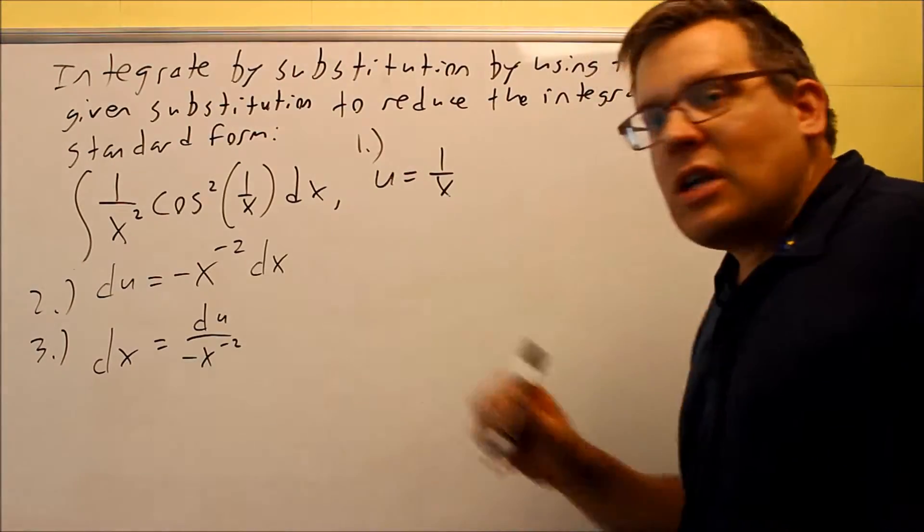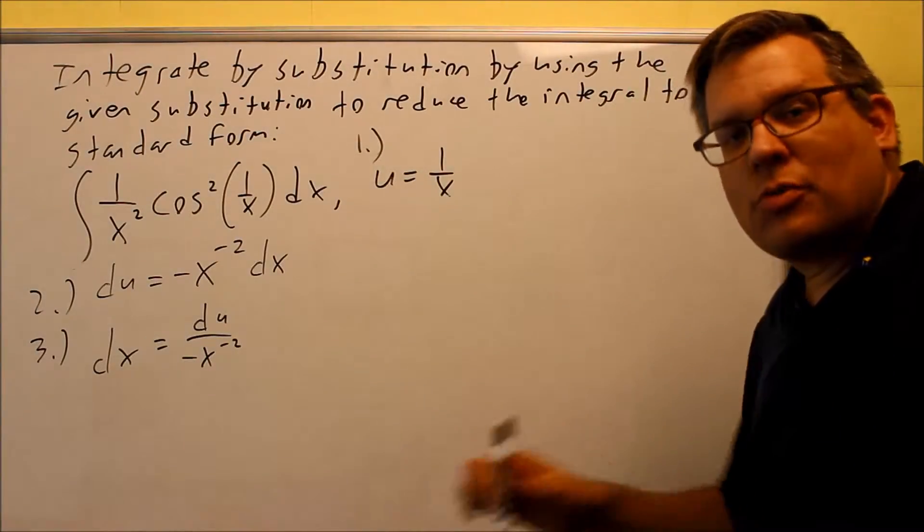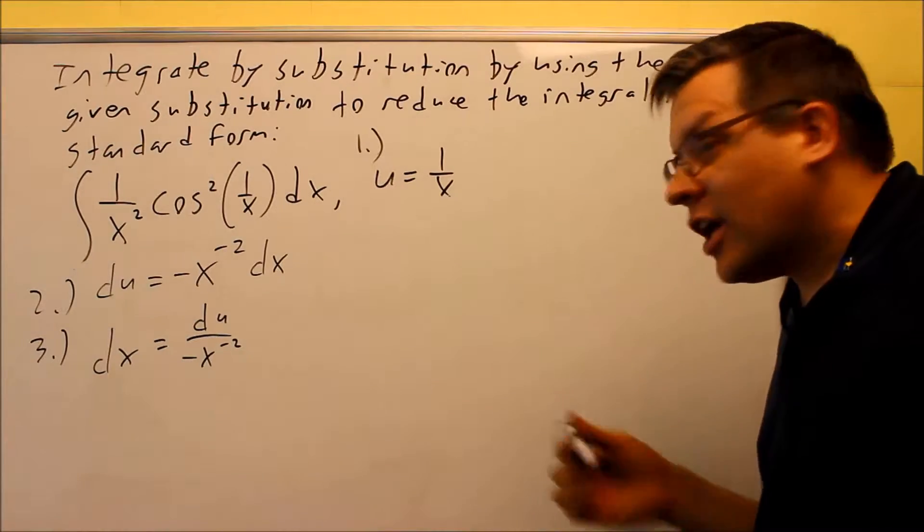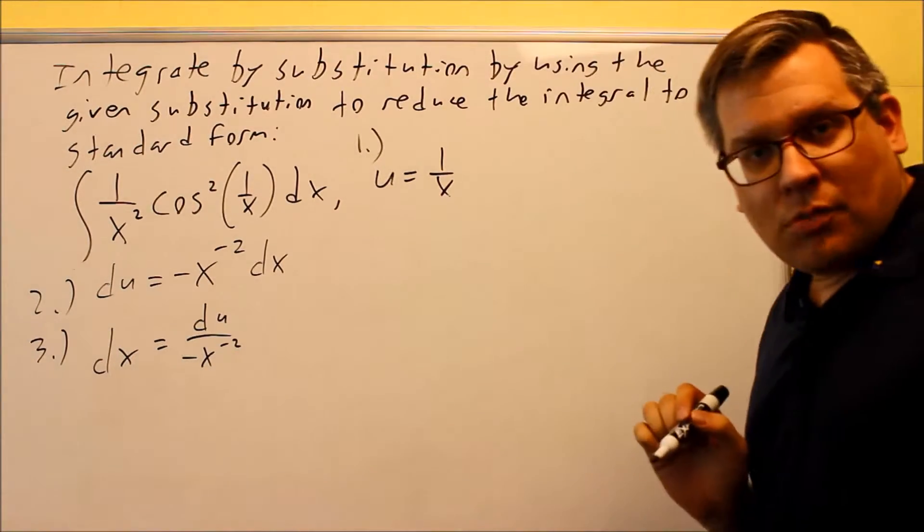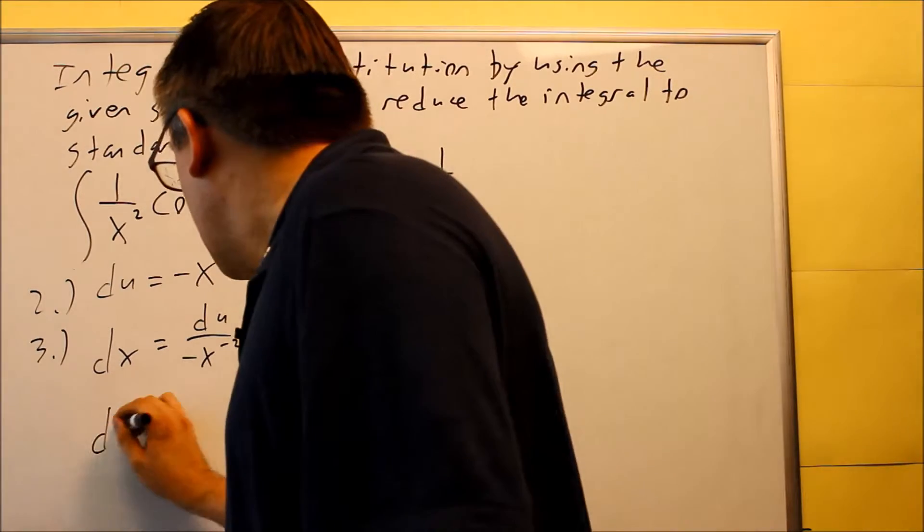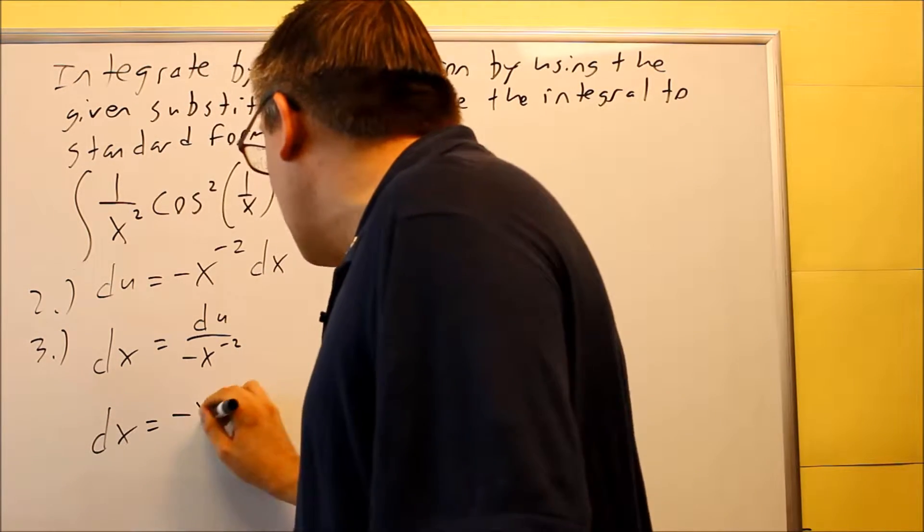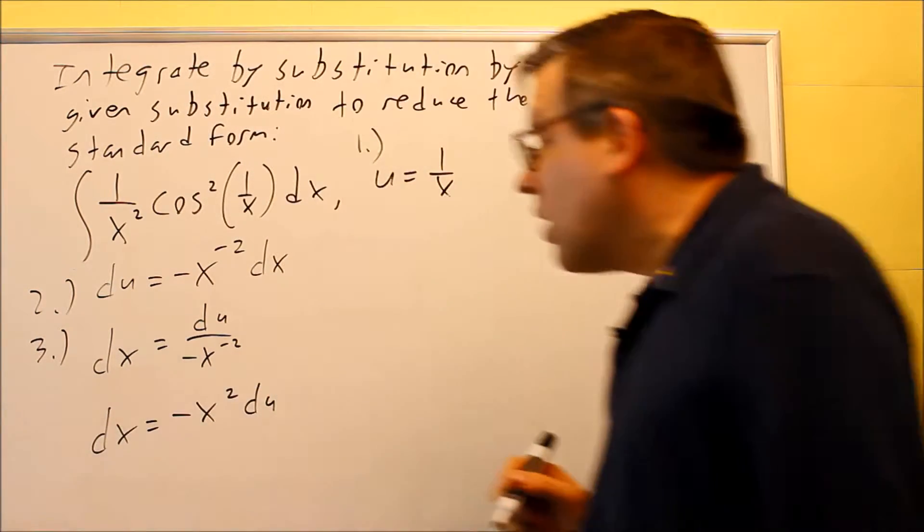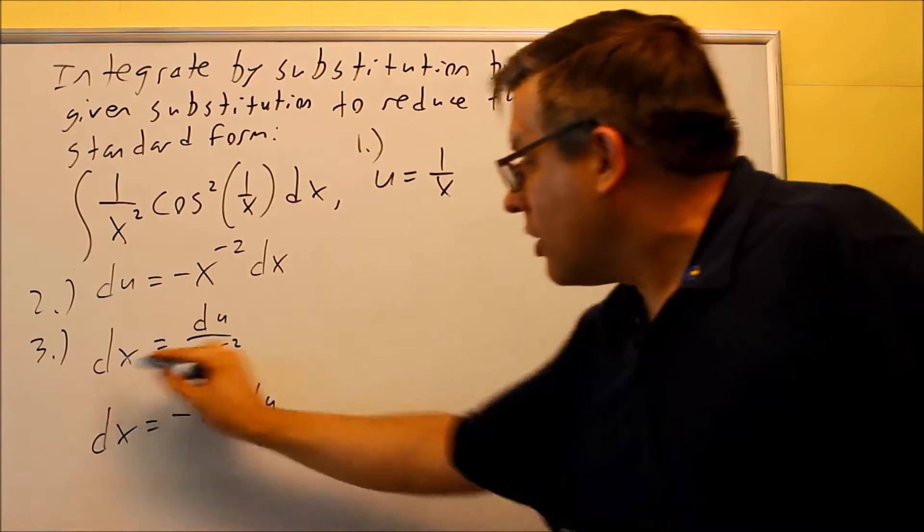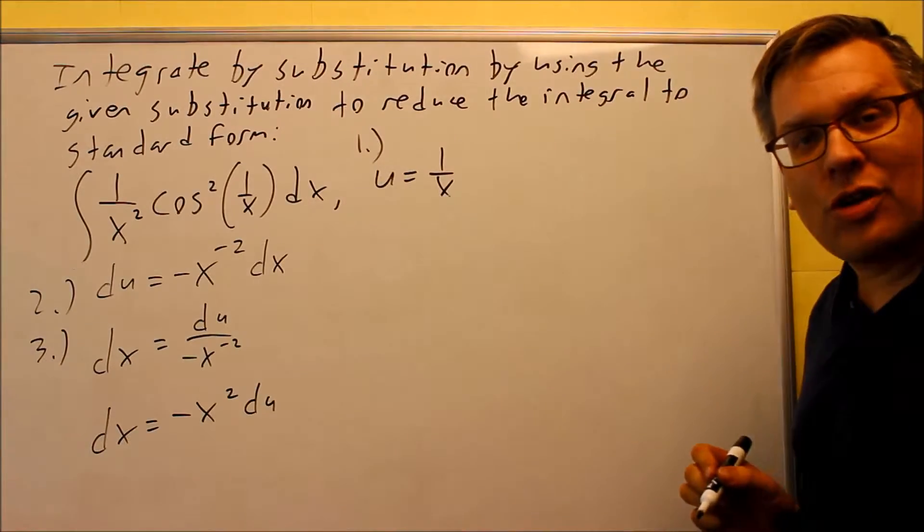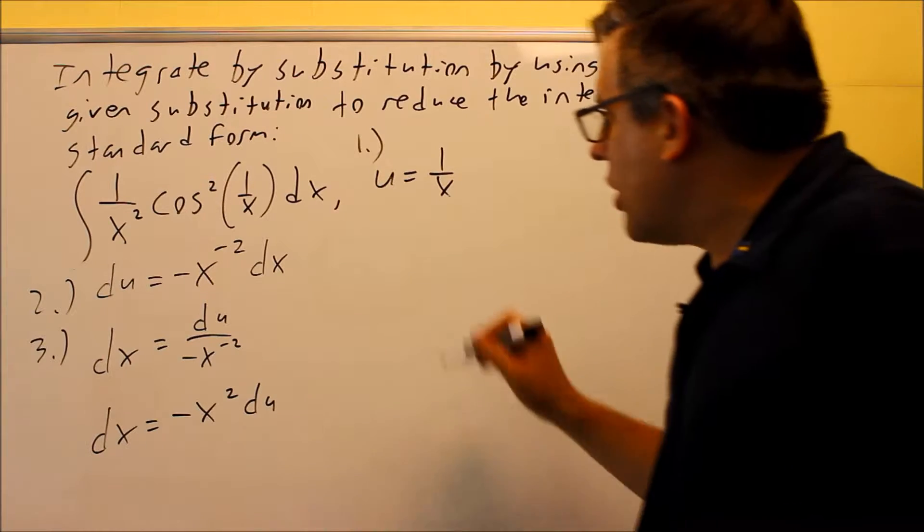But it's probably going to be easier to get rid of the negative exponent. It will be easier to substitute in later, so we're going to move this one up to the top. So dx is equal to negative x squared du. So just moving that up there. Now we have our dx isolated and we're ready to substitute this into our equation.